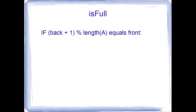The first algorithm is ISFULL. We already talked about how if back is one position less than front, the queue is full. We'll use modulus to support the wraparound logic, because back and front aren't always going to be in the order you'd normally expect. So if (back + 1) modulus length of A equals front, we return true — the queue is full. Otherwise, return false. Note that this means one element in the array will not store any queue value — it's just a side effect we have to live with.